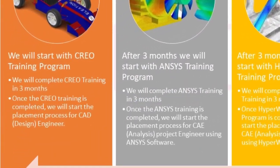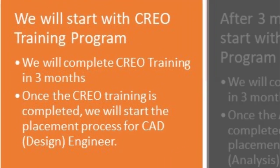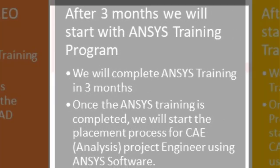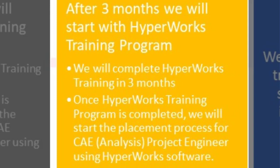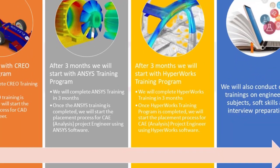Now let's see the complete process of Eliation's 1-year PG Diploma in CAD and CAE. We will start with Eliation's Creo Training Program and complete it in 3 months. Once Creo training is completed, the placement process for CAD Engineer will start. Then we will start the Ansys training, complete it in 3 months, and the placement process for CAE Engineer for Ansys software will start. Along with that, we will start HyperWorks training and complete it in 3 months.